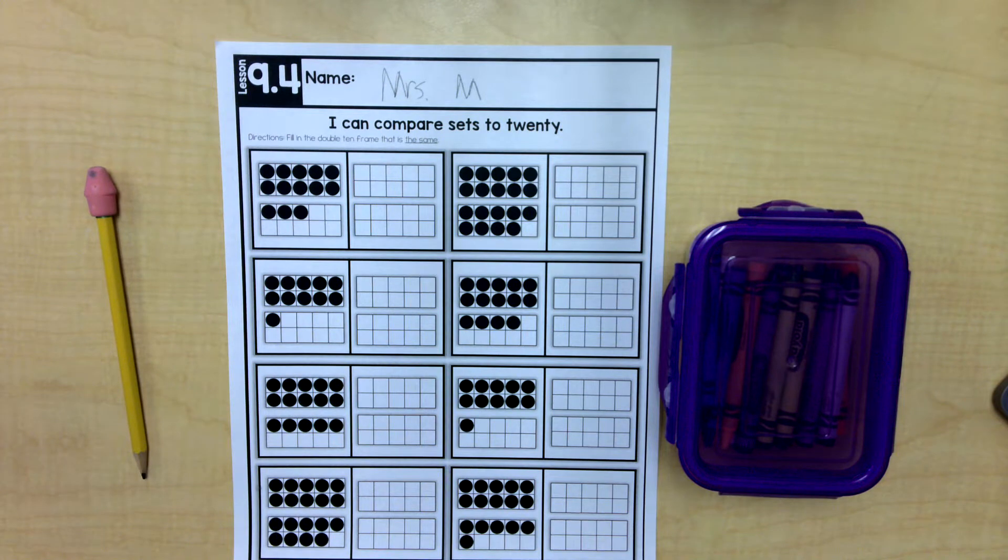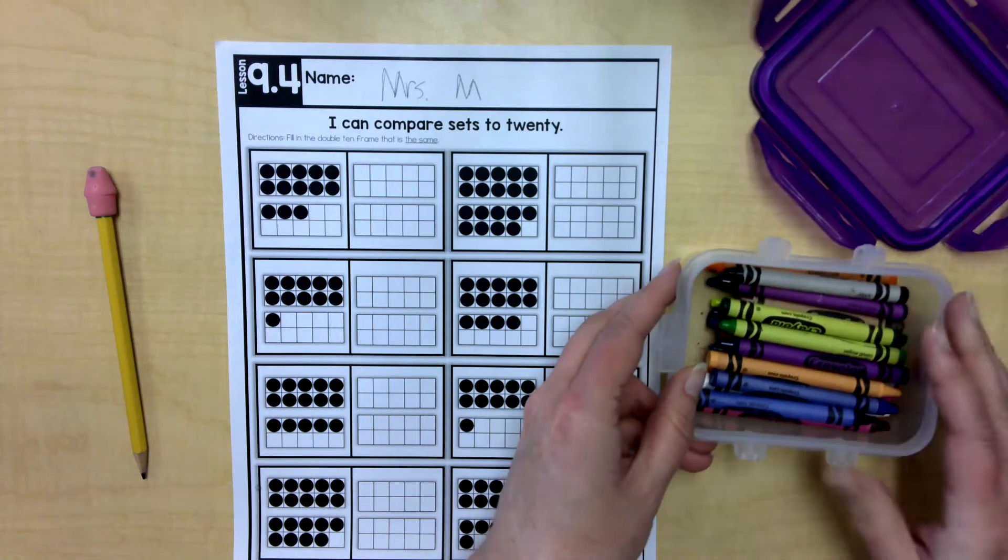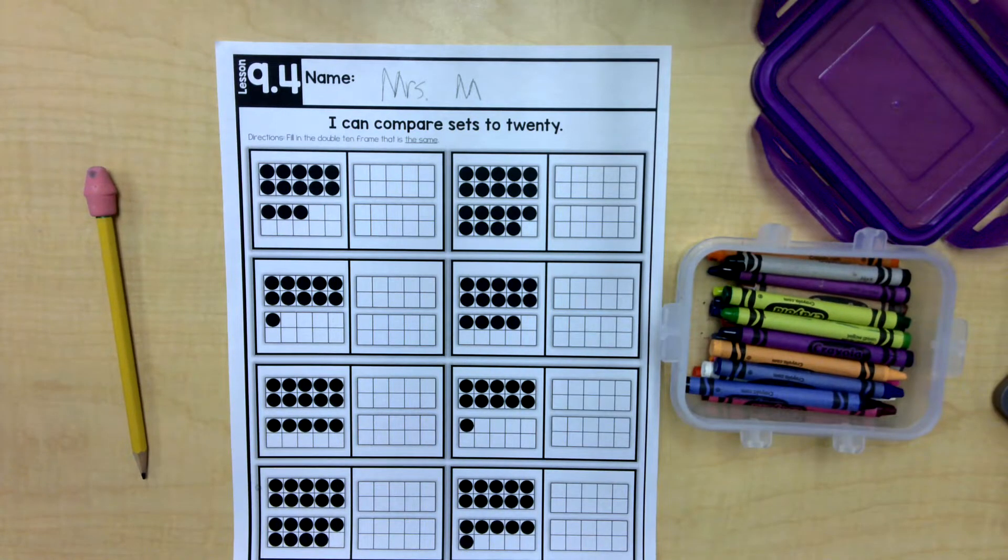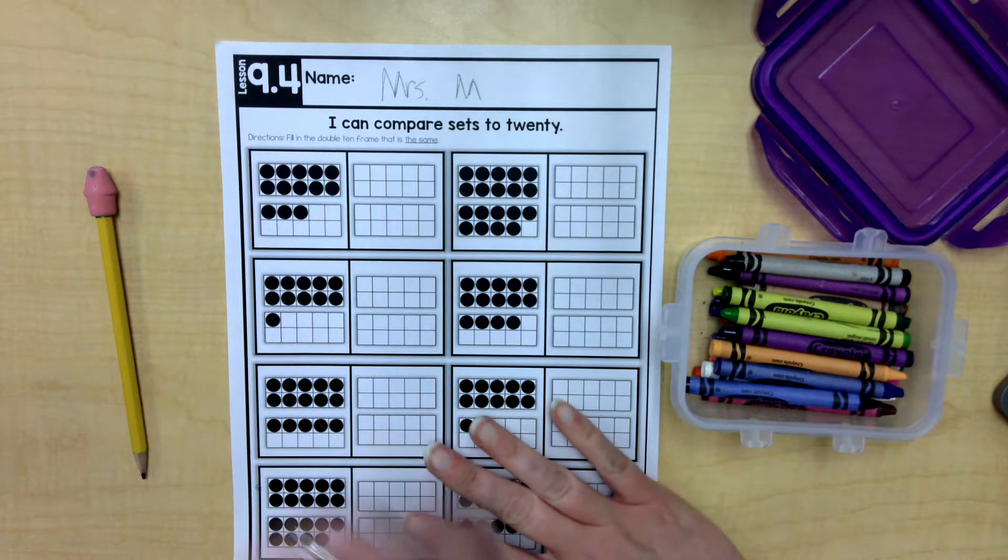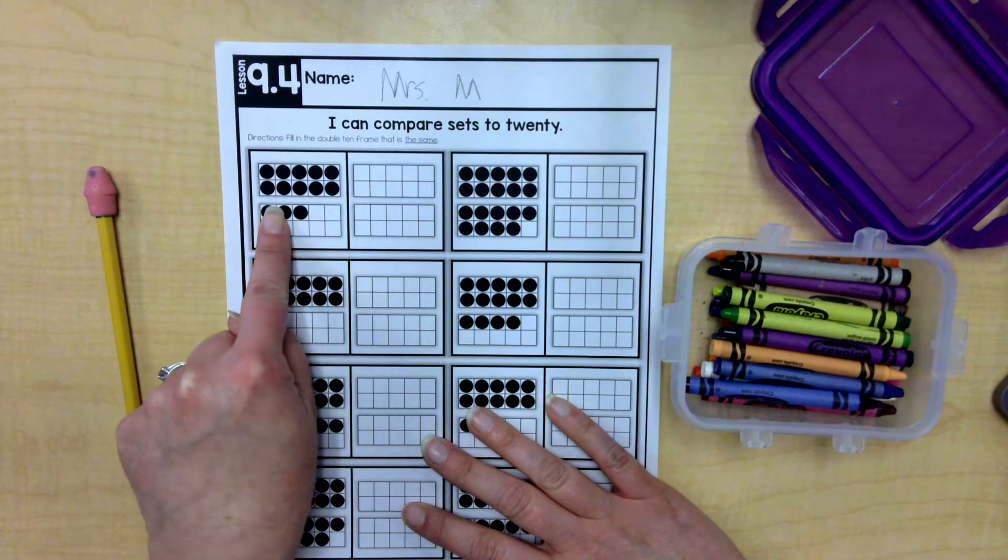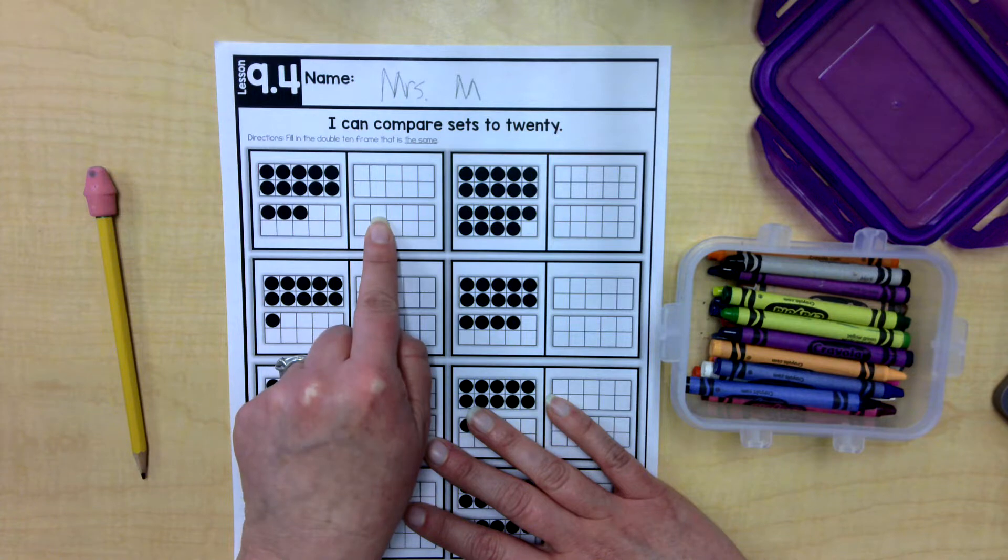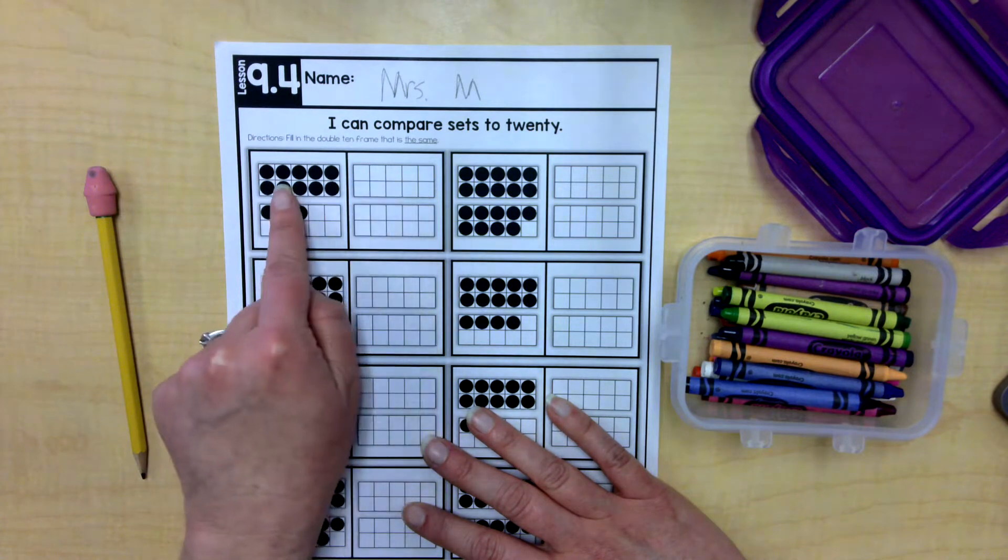Okay, let's see here. I'm going to need my crayons for this page. There they are. Okay, it says fill in the double 10 frame that is the same. Oh, so I have to look at this double 10 frame and then make these double 10 frames match. So they have to be the same.